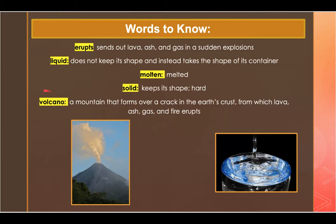And the last word to listen for is volcano. A volcano is a mountain that forms over a crack in the Earth's crust from which lava, ash, gas, and fire erupts. An example of this is in order to study the volcano, the scientists had to climb from the bottom of the volcano to the very top.